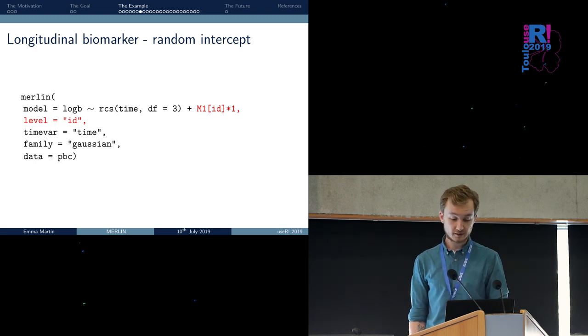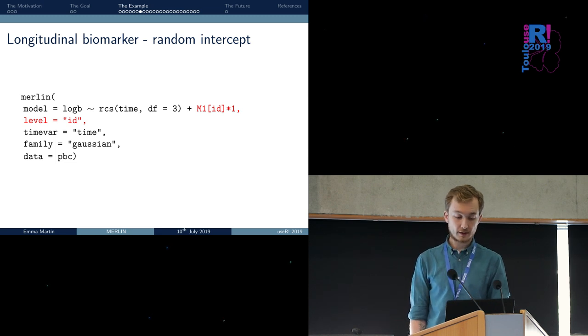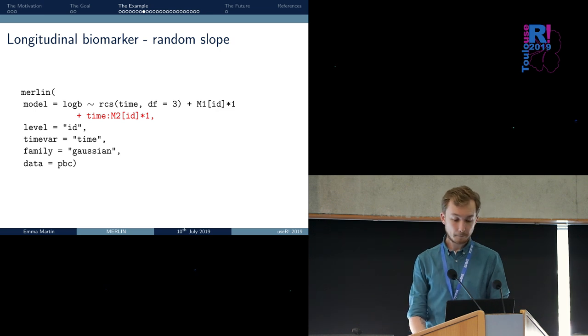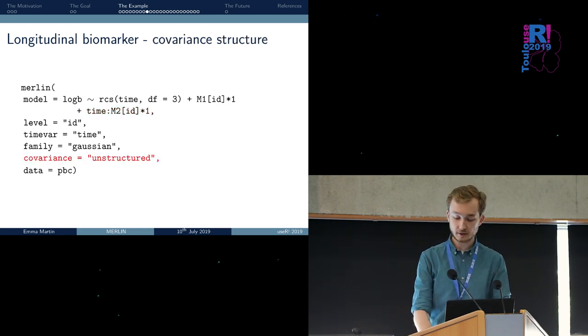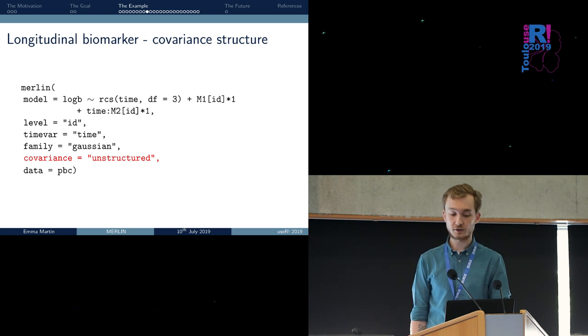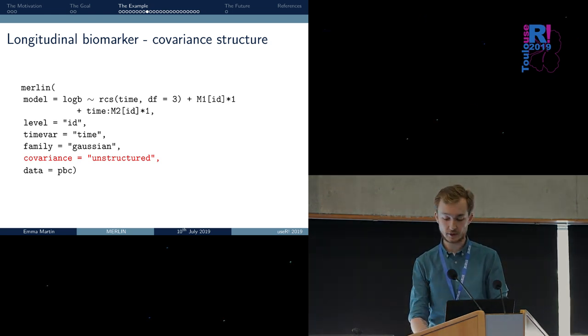We can extend this model further. We can include a random slope. In this case, we have two random effects, M1 and M2. The second random effect, M2, interacts with time. In this model, we are assuming that the two random effects are independent. But we can relax this assumption and ask the program to assume an unstructured variance-covariance matrix for the random effects. This will essentially estimate a correlation coefficient between M1 and M2 as well.